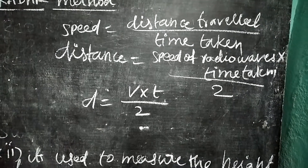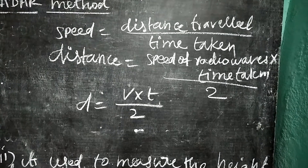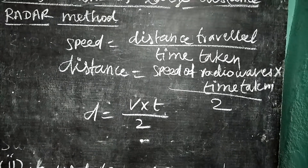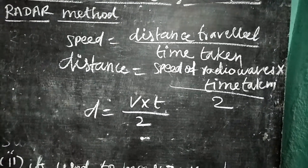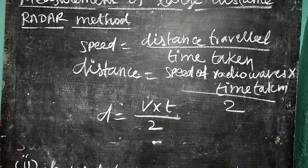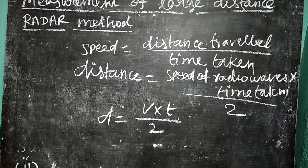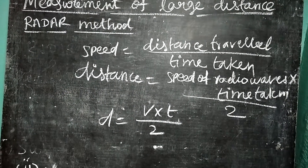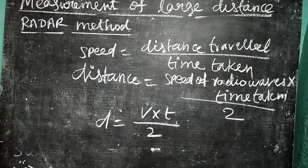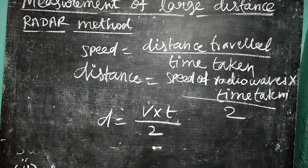Speed is equal to distance traveled divided by time taken. Therefore, distance is equal to the speed of radio waves multiplied by time taken, divided by 2. So, D equals V into T divided by 2, where V is the speed of the radio waves and T is the time taken for the radio waves to travel the forward and backward path.